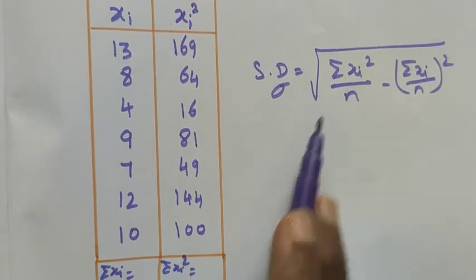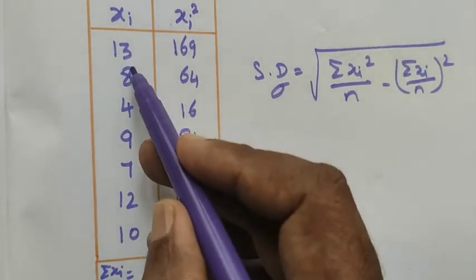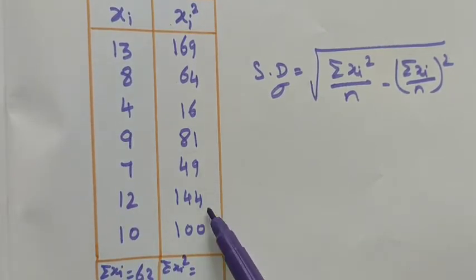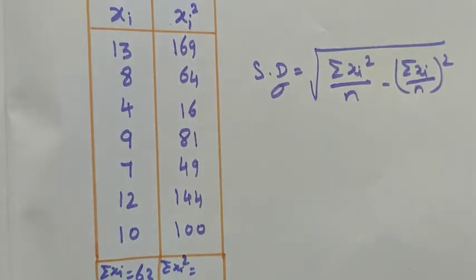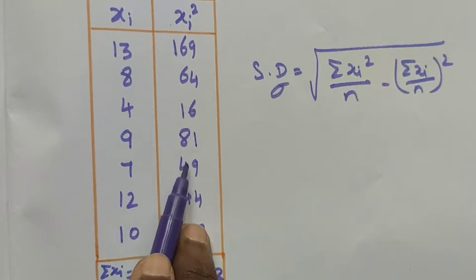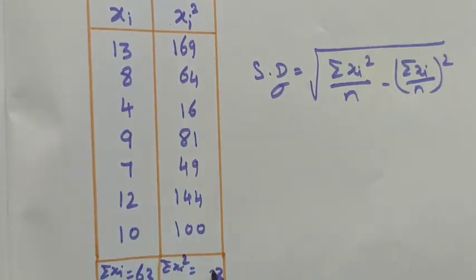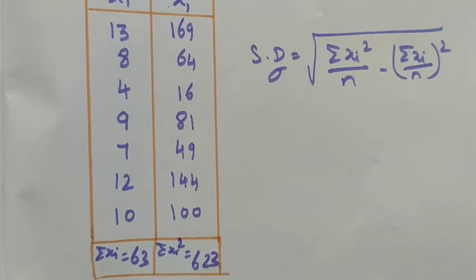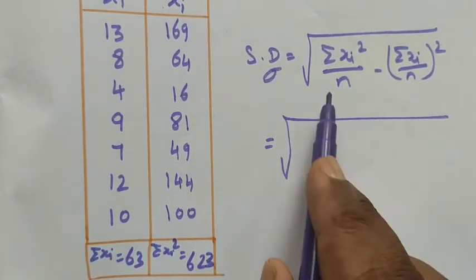So we want to find out summation of xi square and summation of xi. Now we want to add this term. If we add this term we get 63. If we add this, that's 10, 14, 20, 24, 33, remainder 3, 7, 11, 19, 20, 32, remainder 2, 3 plus 1 is 4, 5, and then 6.